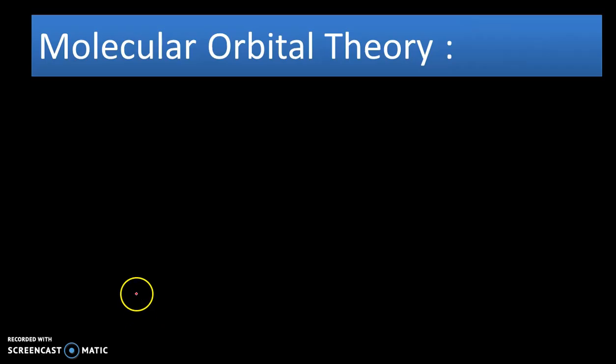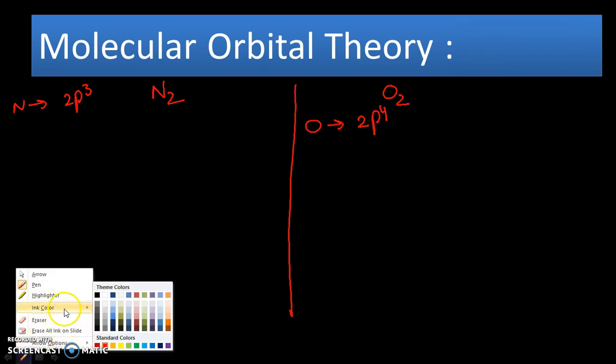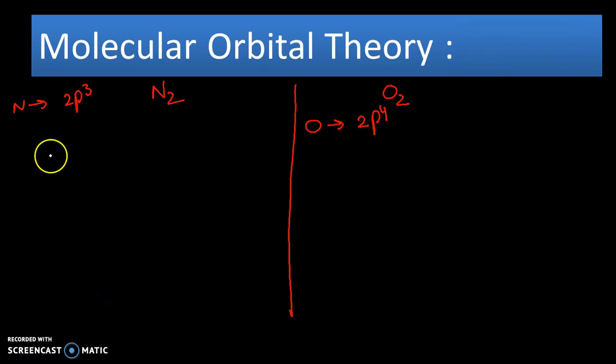Let's take an example of N2 and O2. The electronic configuration of nitrogen is 1s2 2s2 2p3, and oxygen is 1s2 2s2 2p4. The main concept is the way of splitting.